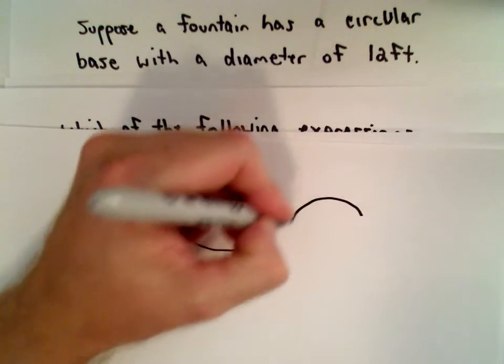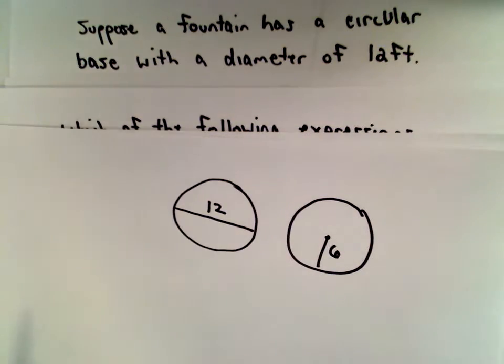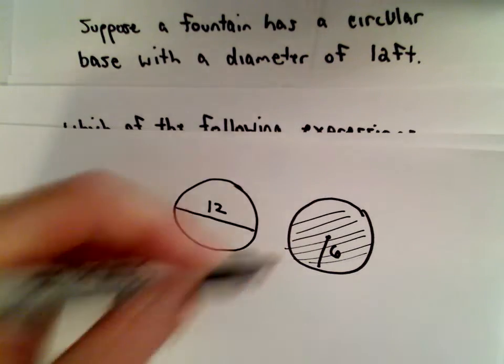Or, equivalently, if the diameter is 12 feet, that means that it has a radius of 6 feet. So we're just wanting to find that area of the fountain.